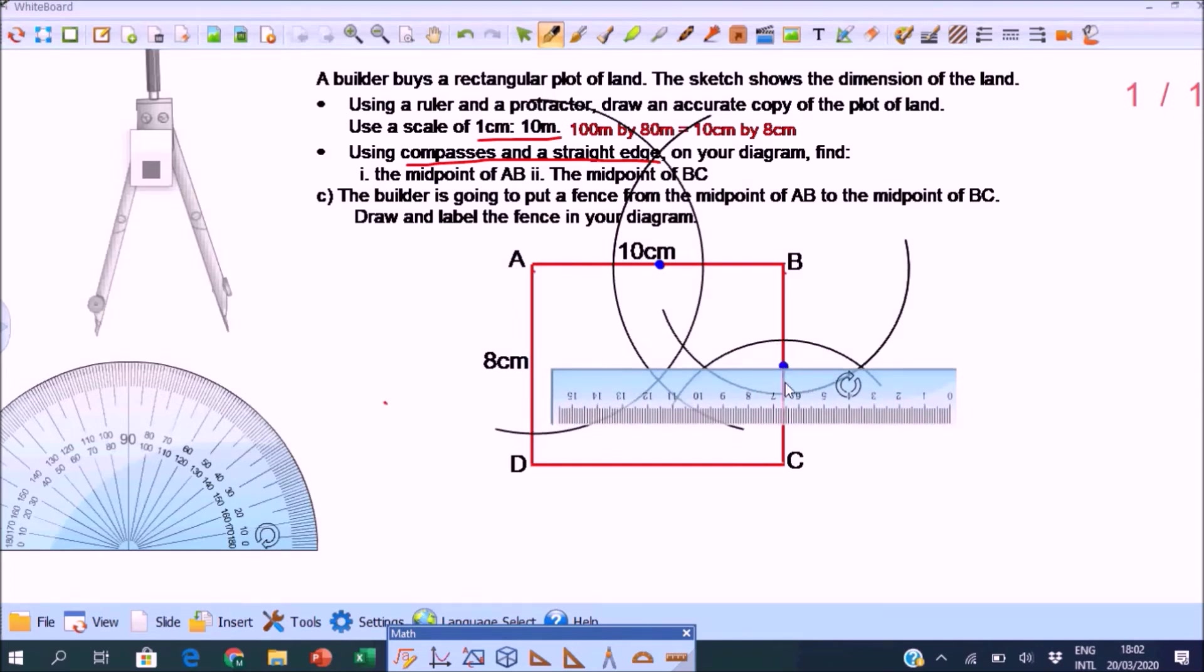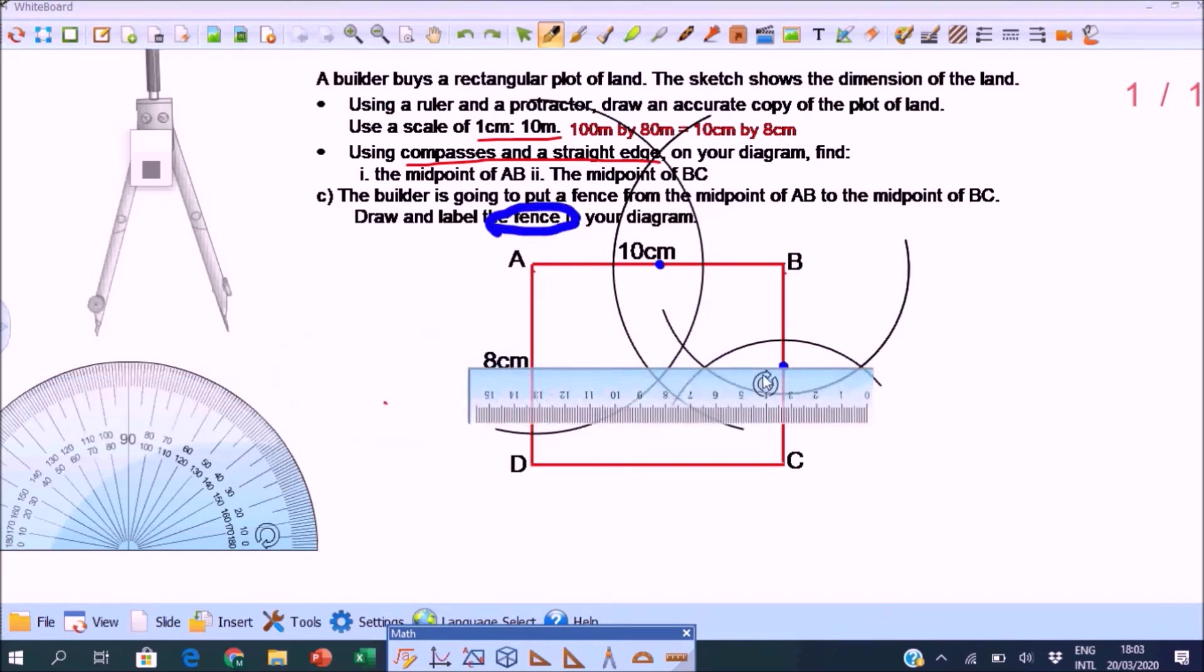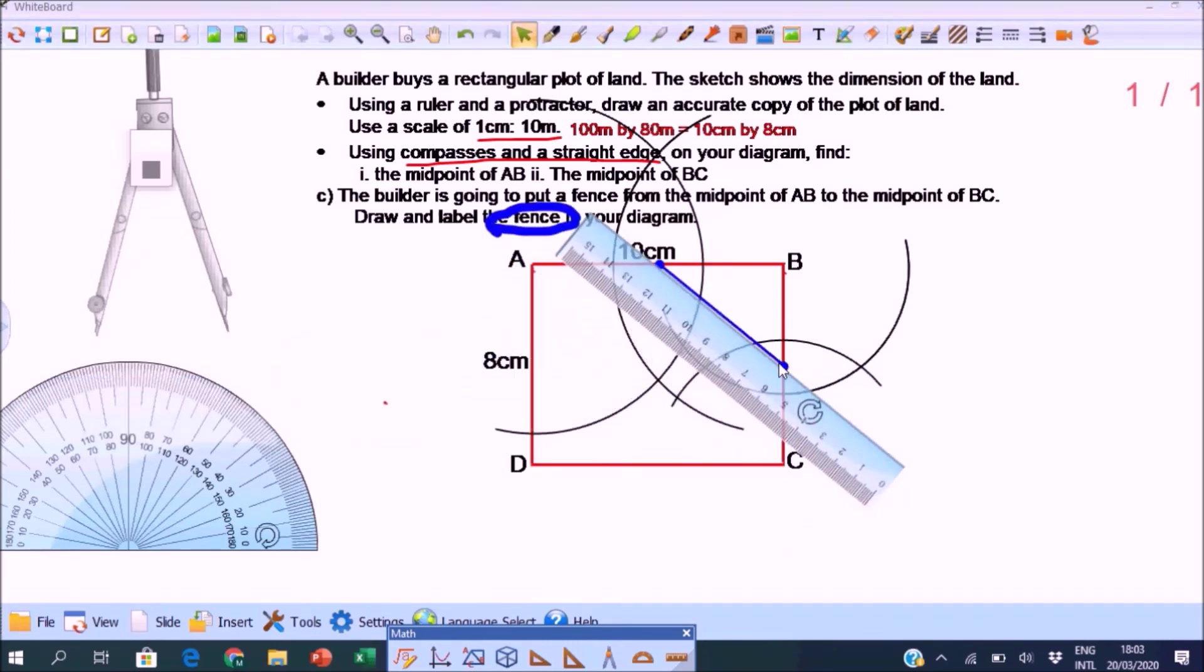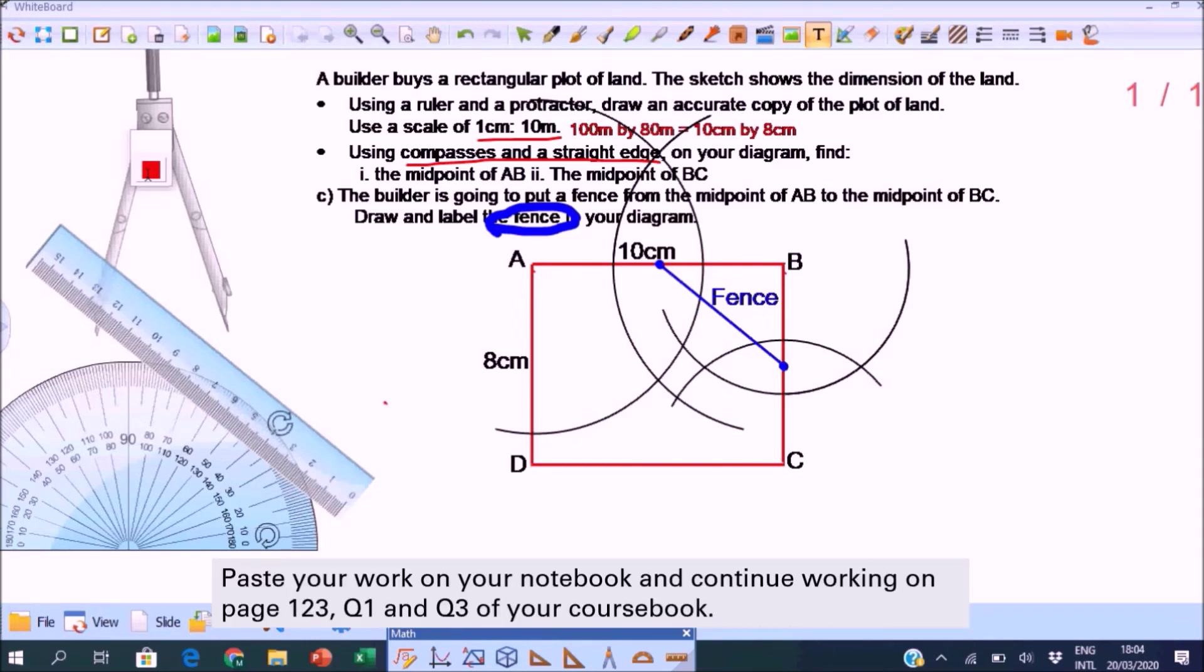Now it says the fence. Connect the two midpoints. So that is the fence. You should get a diagram the same as this. If not, do it again. Copy this diagram. And then paste your work on your notebook. And continue working on page 123, question 1, and question 3 of your course book.